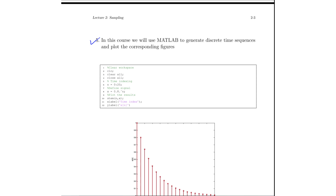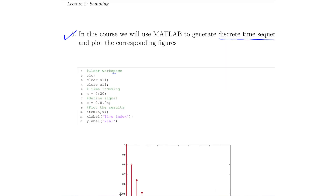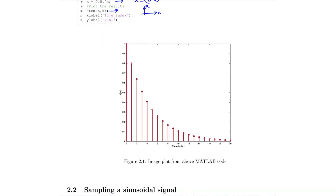As stated earlier in this course, since we are using MATLAB to generate the discrete time sequences, what we are showing here is a simple MATLAB program which is basically generating a discrete time signal. The first three lines are clearing the workspace. Then there is a time indexing running from 0 to 20, that is n running from 0, 1, 2 till 20. Here we are defining a signal x as 0.8 to the power of n. As n varies from 0 to 20, we have a vector x having different values. This is basically plotting the results of the time signal x with respect to n. What we are seeing here in the slide below is the plot corresponding to the MATLAB code discussed at the top.